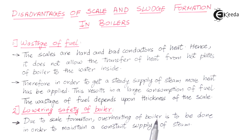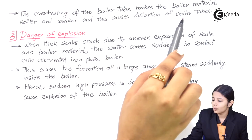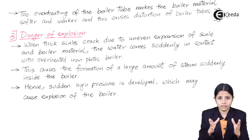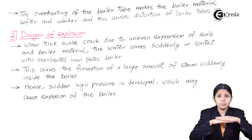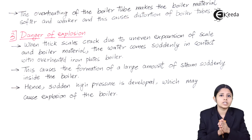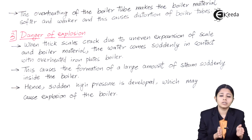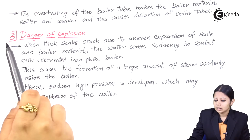The second disadvantage is lowering the safety of the boiler. Due to scale formation, overheating of the boiler occurs in order to maintain a constant supply of steam. The overheating of the boiler tube makes the boiler material softer and weaker, causing distortion of the boiler tube. For example, if a boiler is designed for 100°C but scale forces you to apply 120–150°C, the boiler material is not accustomed to that level of heat, risking breaking or distortion.